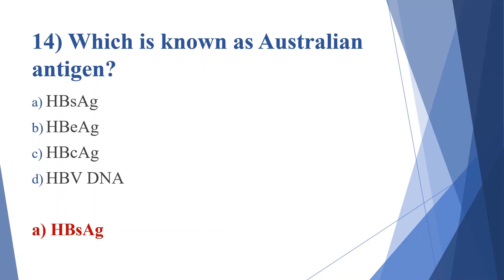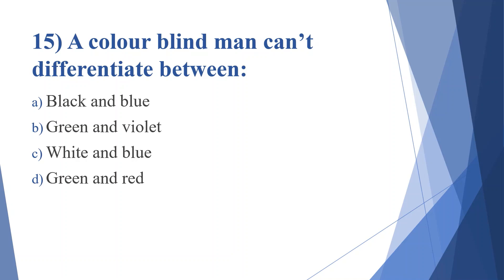Fifteenth question: a colorblind man cannot differentiate between. Option A: black and blue. Option B: green and violet. Option C: white and blue. Option D: green and red. Answer is option D, green and red.